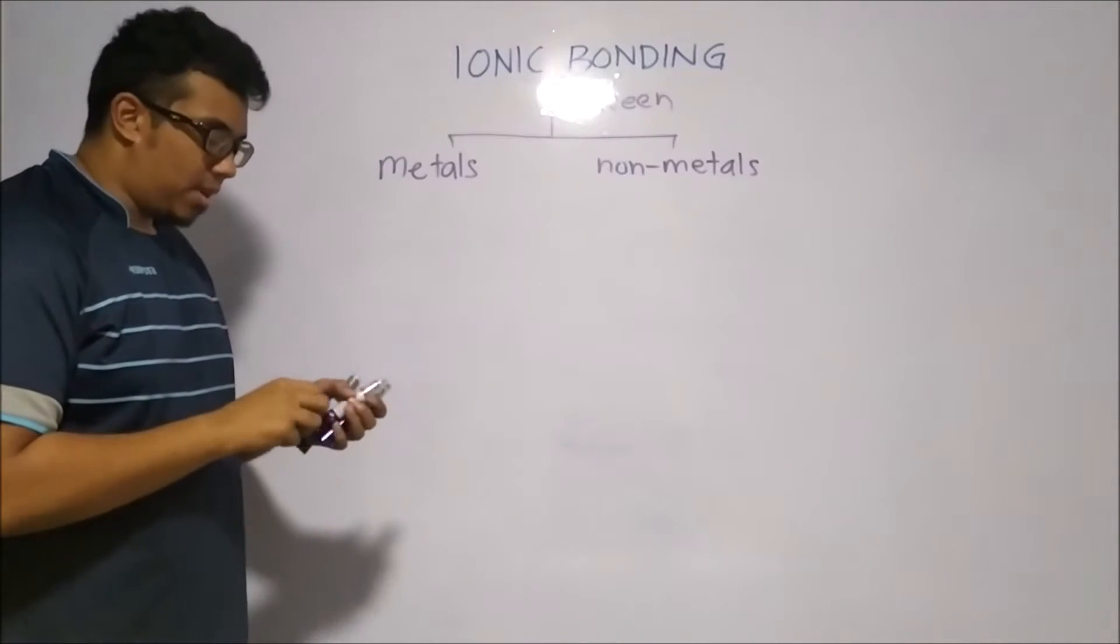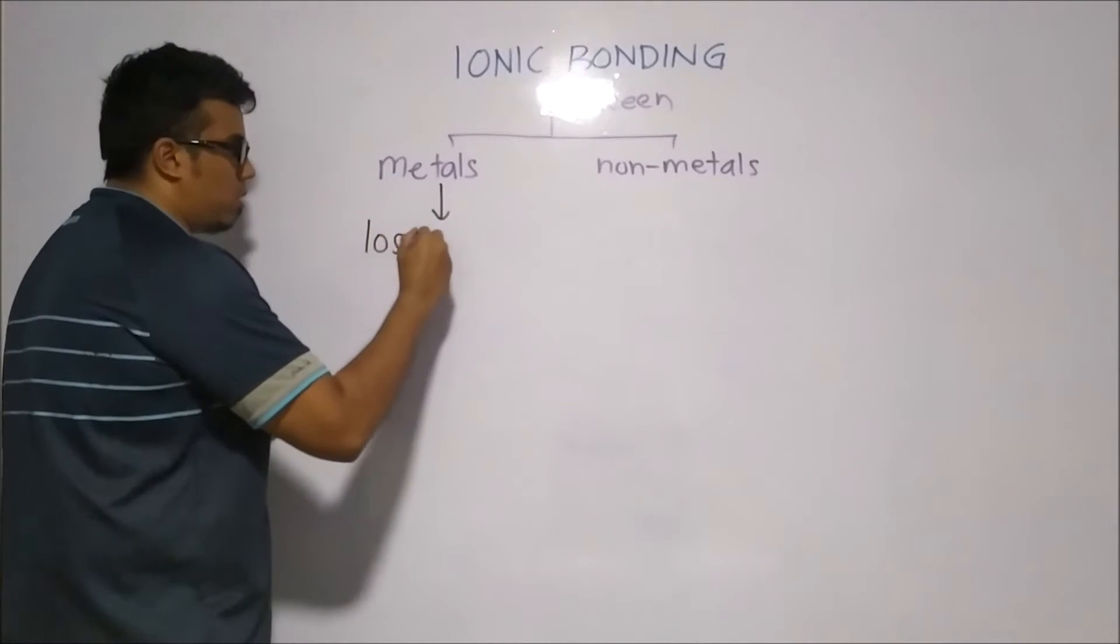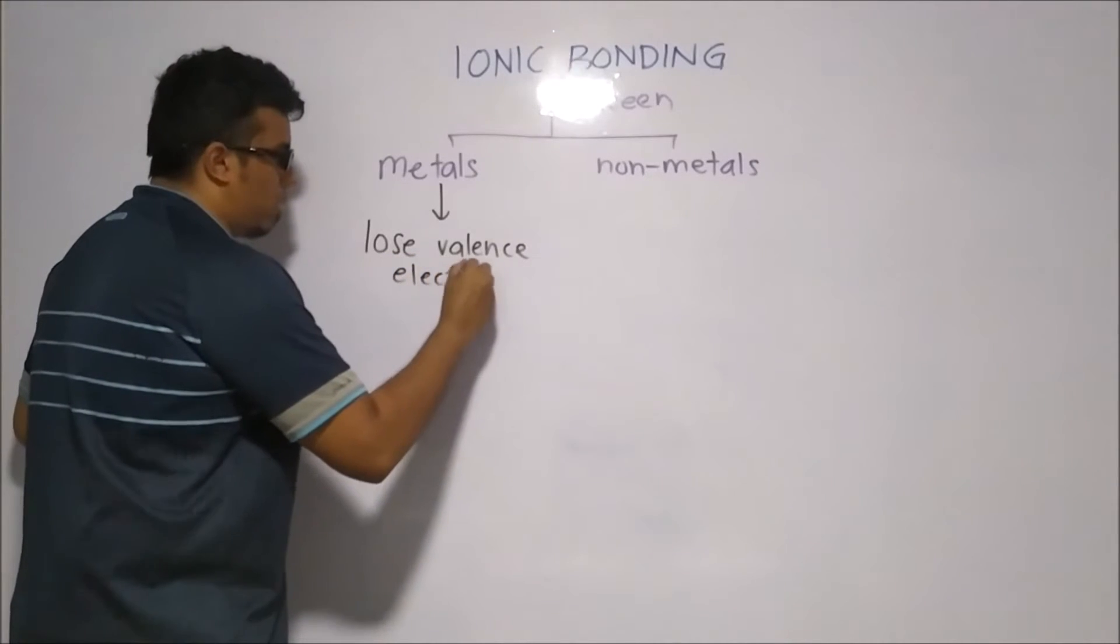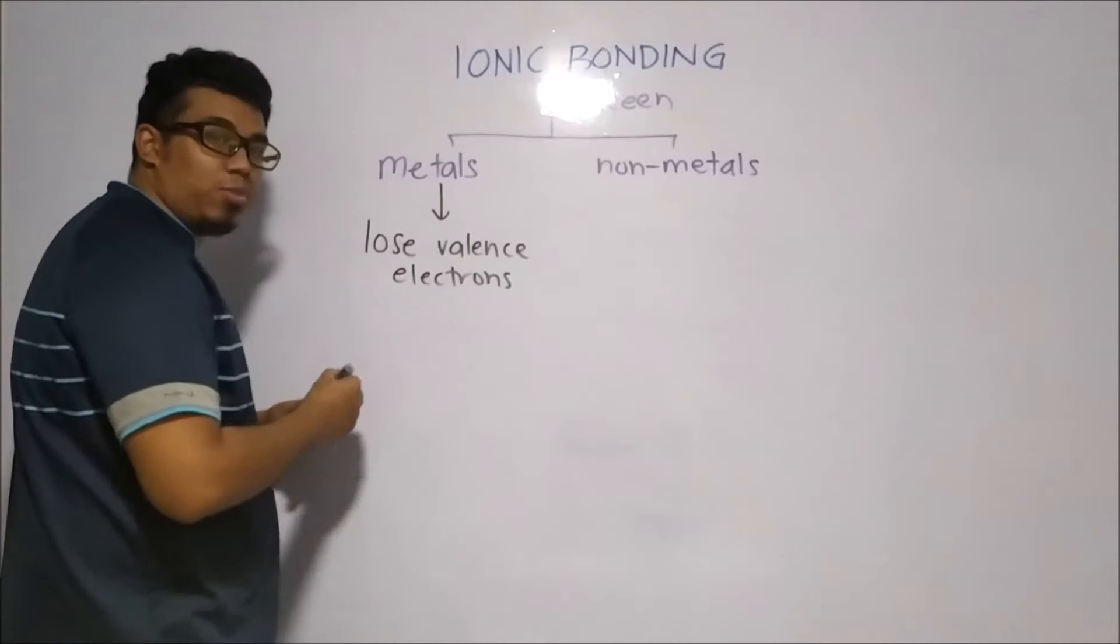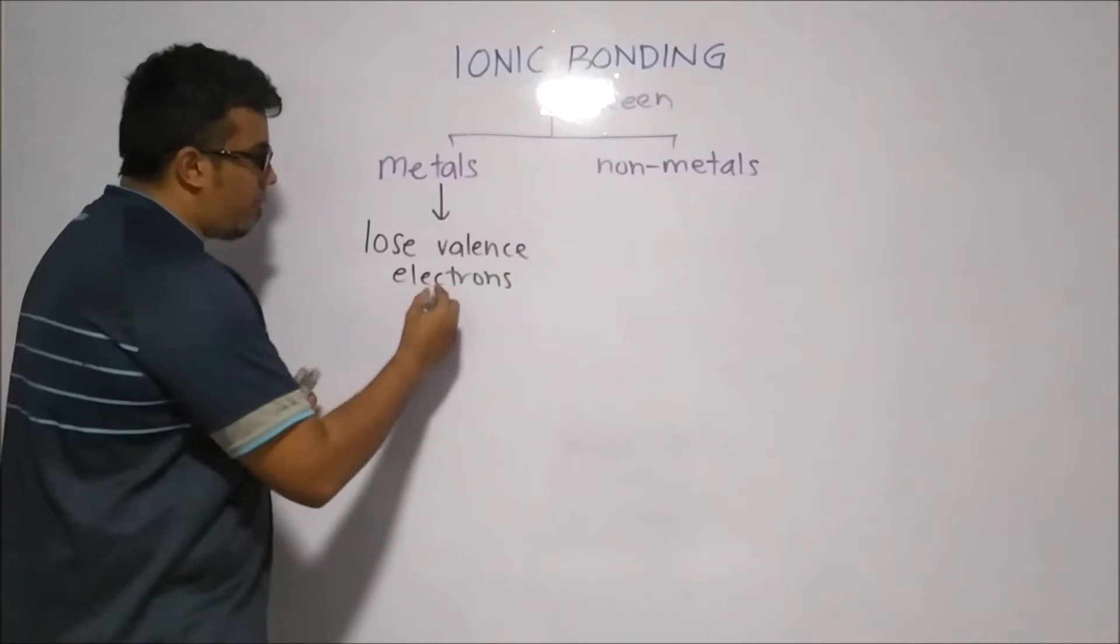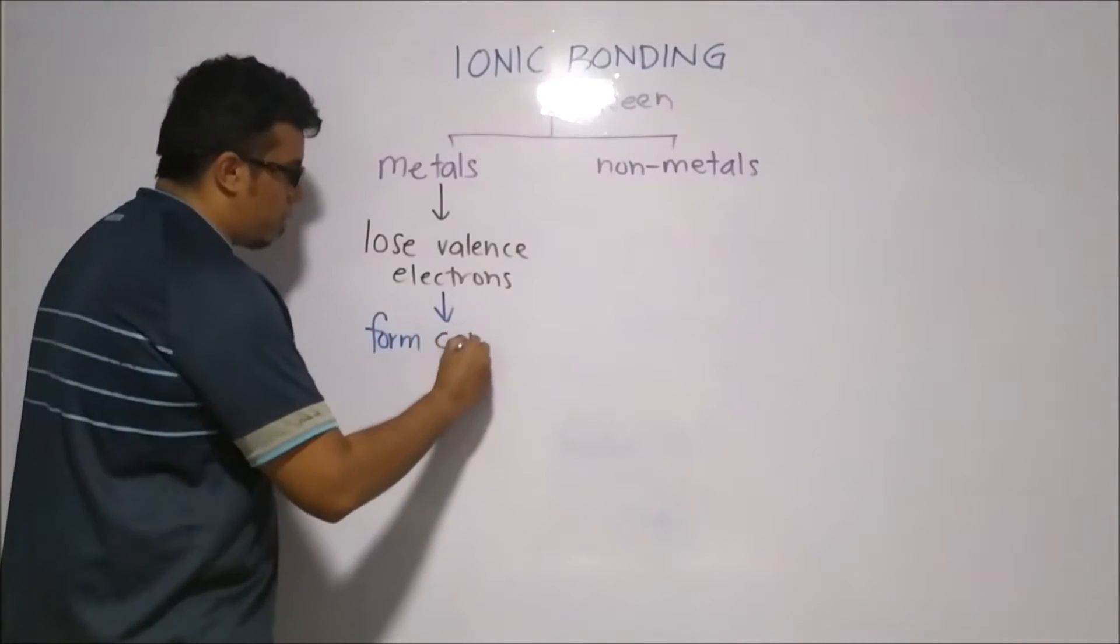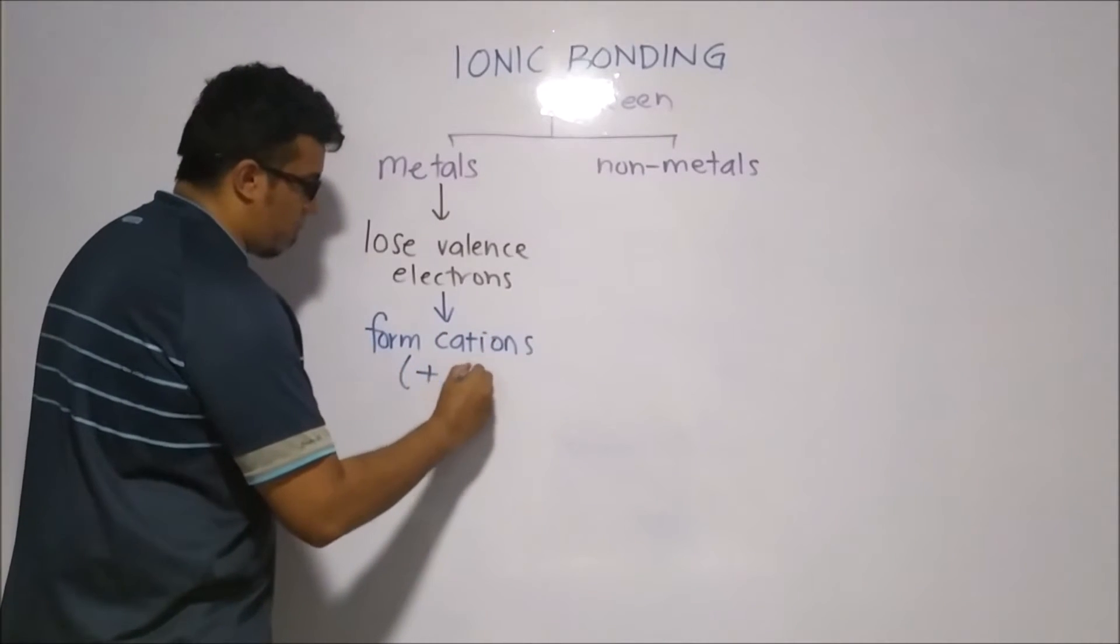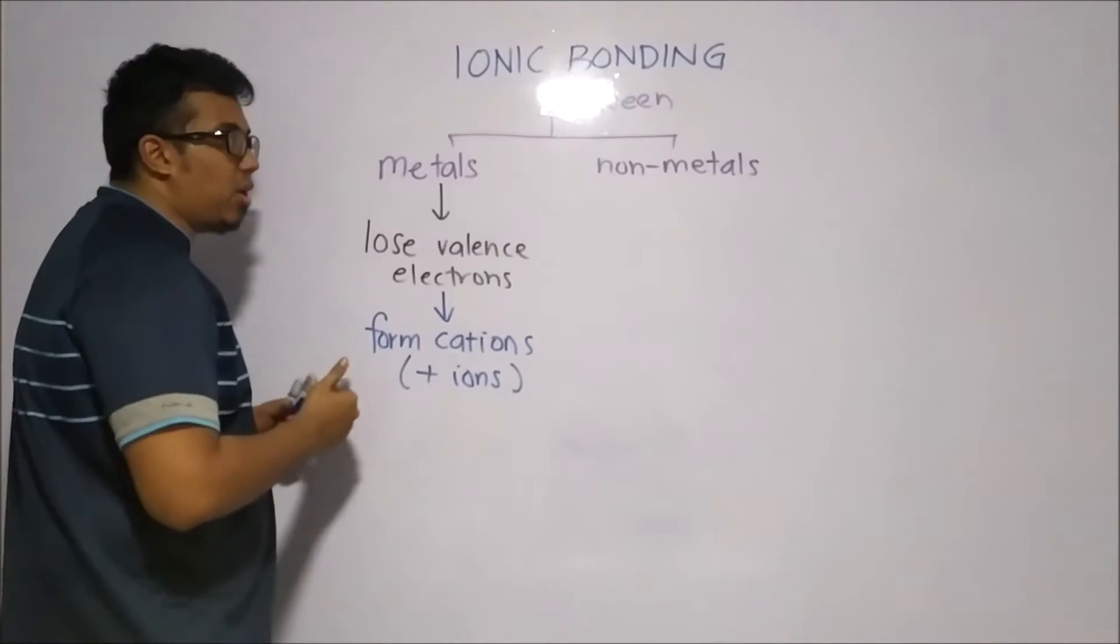What we know about metals is that they actually tend to lose a valence electron. And when they lose valence electrons, as we learned before, there will be more protons as compared to electrons. And this will result in them forming what we call a cation or positive ion.